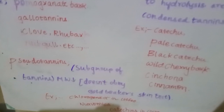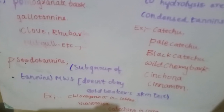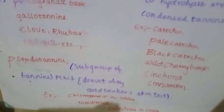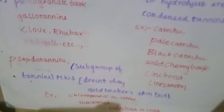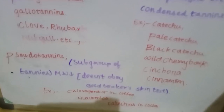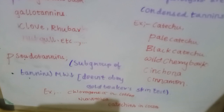Examples of pseudo tannins include chlorogenic acid found in coffee, nux vomica, and catechins in cocoa. Thank you.